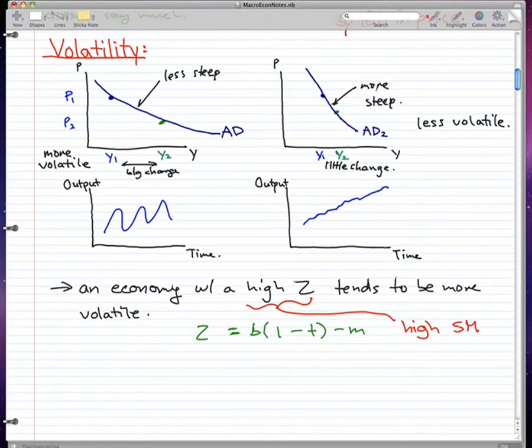A small note is that the willingness to import or tax may reduce Z. If we tax a lot or T is big enough, or M is big enough such that when we calculate it we get a lower Z.